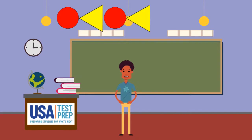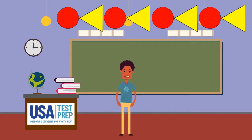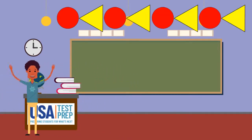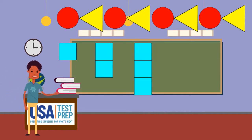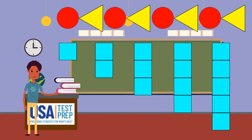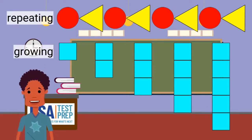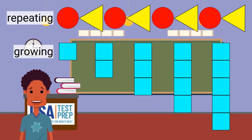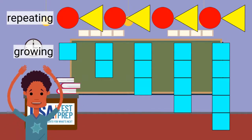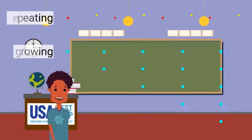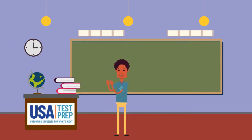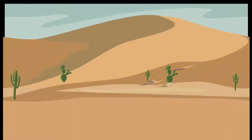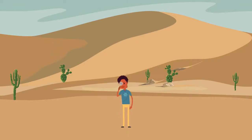That means they have a part or rule that happens over and over again. There are some patterns though that are growing patterns. A growing pattern is a pattern where part of the pattern grows or gets bigger. Are repeating patterns and growing patterns the same? Great — you are correct that they are different!